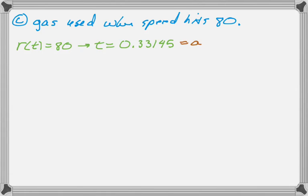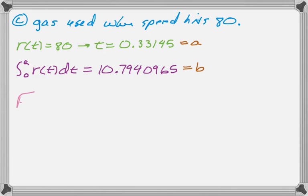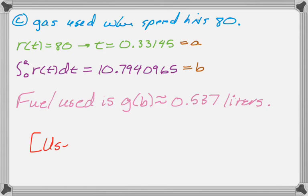Then what we need to do is we need to find the kilometers traveled to get up to the speed of 80, which is the integral from 0 to A of R of T dt, which your calculator will tell you is 10.7940965 kilometers. Store that. And then finally, what we want to do is figure out how many liters of gasoline were used, but that's exactly what G of X tells us. So all I need to do is find G of B. So the fuel used is G of B, and your calculator will tell you that that is approximately 0.537 liters.